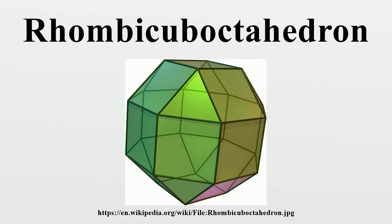The polyhedron has octahedral symmetry, like the Cuban octahedron. Its dual is called the deltoidal icosatetrahedron or trapezoidal icosatetrahedron, although its faces are not really true trapezoids.